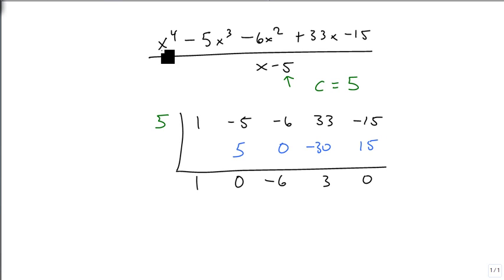Then we go back, and we look, and we say, oh, we started with an x to the 4th. We divided by an x, so that's going to be x cubed, x squared, x constant, and remainder. A 0 remainder goes away. So our final answer is x cubed minus 6x plus 3.